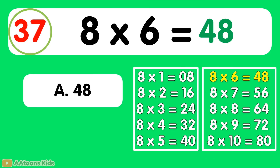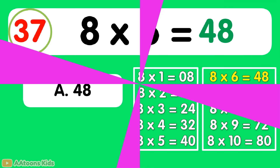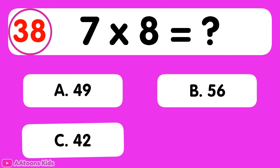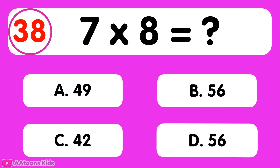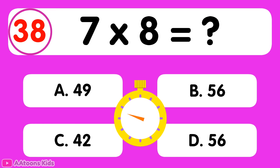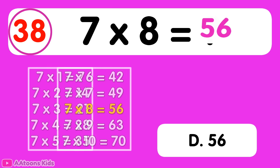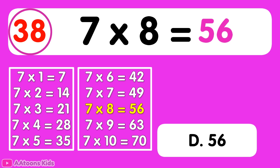7 times 8 is equal to... 56. 7 times 8 is 56.